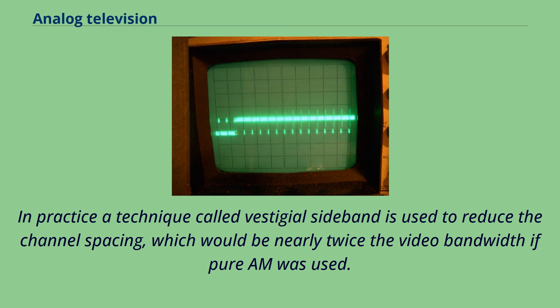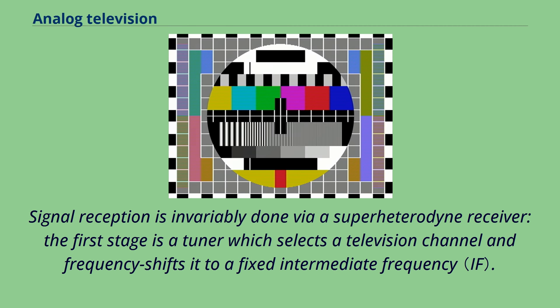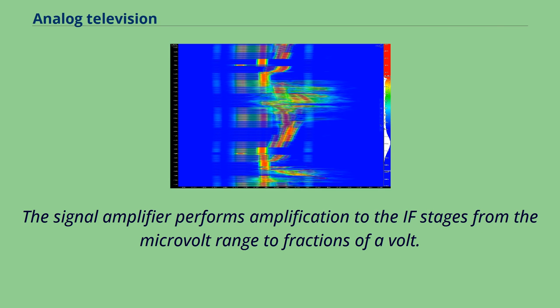Signal reception is invariably done via a superheterodyne receiver. The first stage is a tuner which selects a television channel and frequency shifts it to a fixed intermediate frequency. The signal amplifier performs amplification to the IF stages from the microvolt range to fractions of a volt.